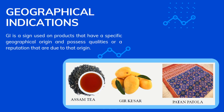Next, geographical indications. A geographical indication is a sign used on products that have a specific geographical origin, or possess qualities or a reputation that are due to that origin — for example, the tea of Assam, the Kesar mango of Gir, or the Patola of Patan.